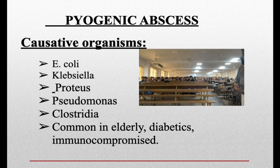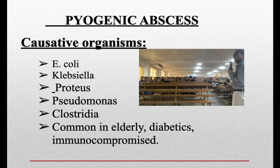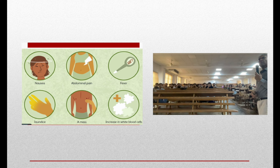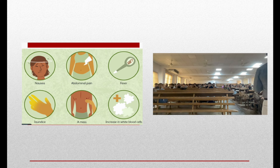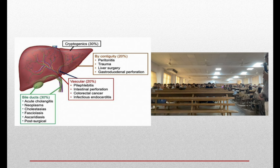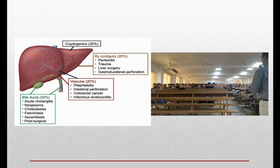Pyogenic liver abscess is more common in elderly and immunocompromised persons. Features include nausea, abdominal pain, high fever, jaundice, a palpable mass, and leukocytosis — unlike amoebic abscess, which has less leukocytosis. Importantly, 30% of cases are cryptogenic — we do not know the source of the abscess.